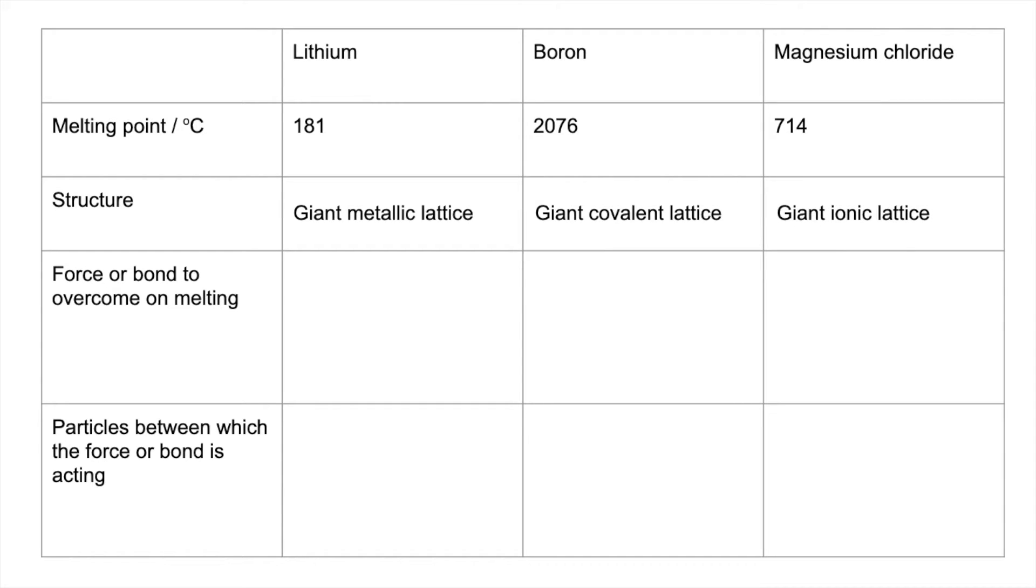So the force or bond that needs to be overcome on melting. For lithium, which is obviously a metal, it's the metallic bond. For boron, you've got to break the covalent bonds. And in magnesium chloride, it's the ionic bond. So fairly obvious from the structure.